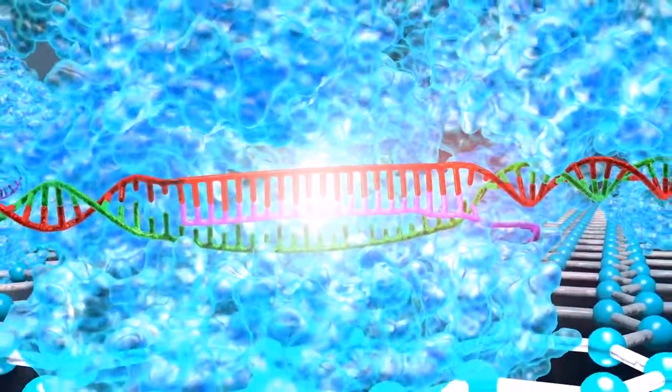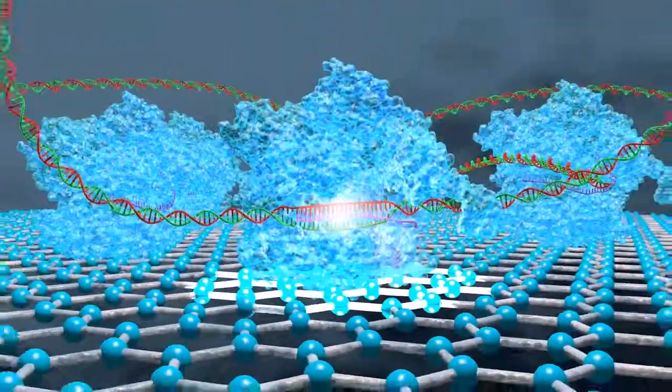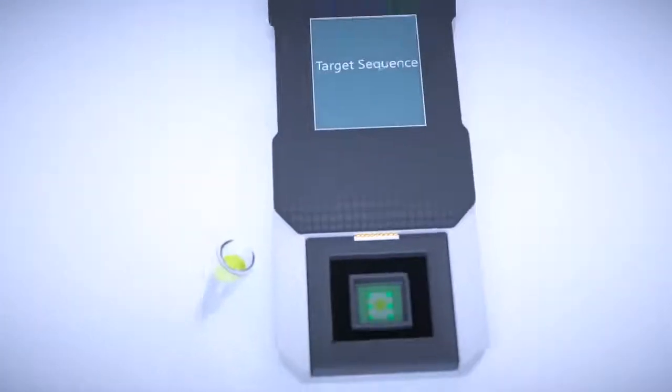Then this binding will create an additional charge on top of the graphene surface and this can be sensed with CRISPR chip.